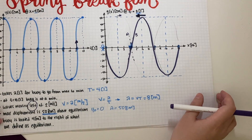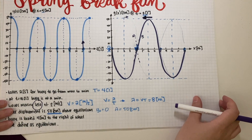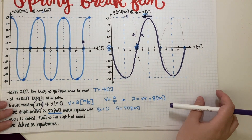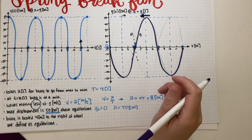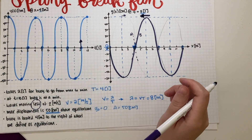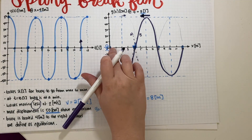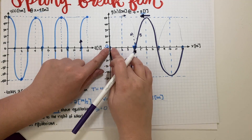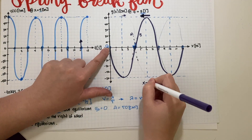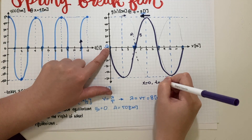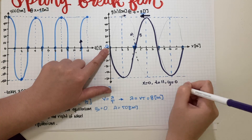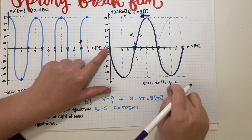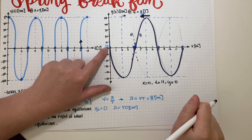There are many ways to calculate the phase constant, but I'll use substitution. I'll pick a known point: at x = 0, t = 11 s, y = 0.